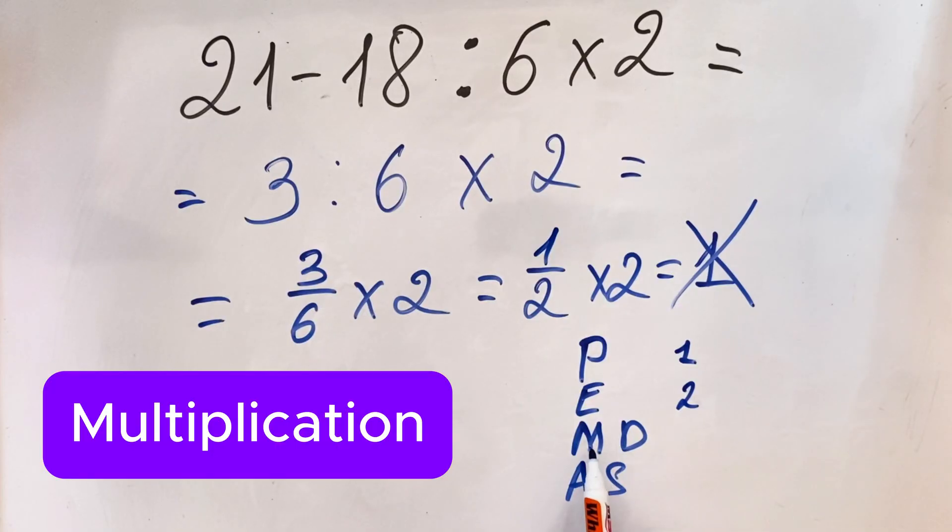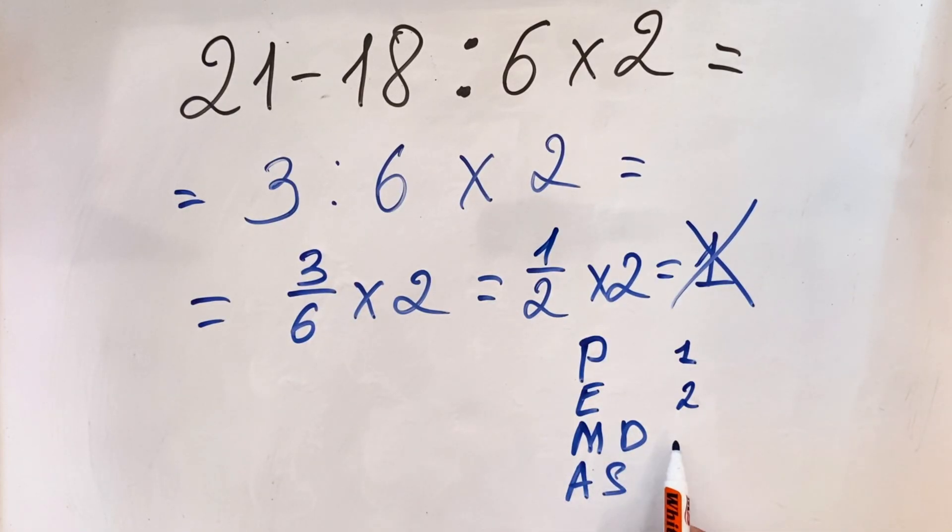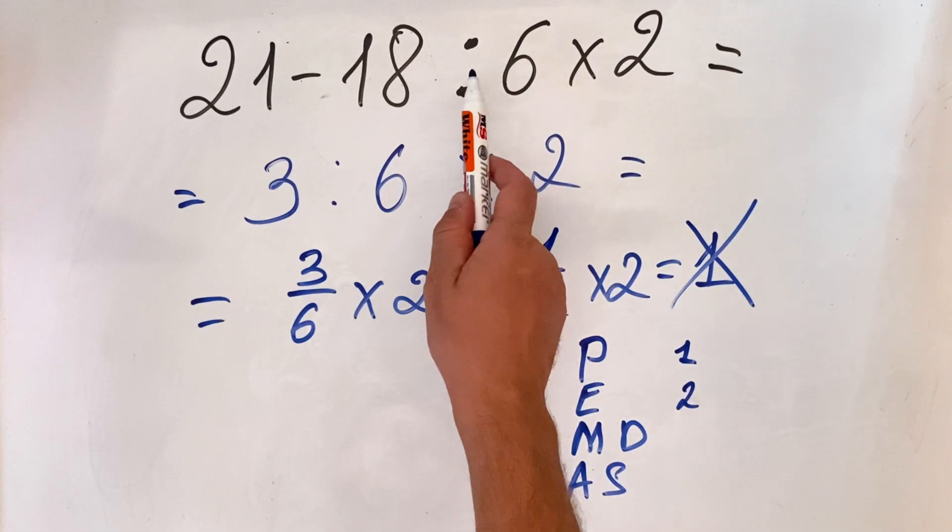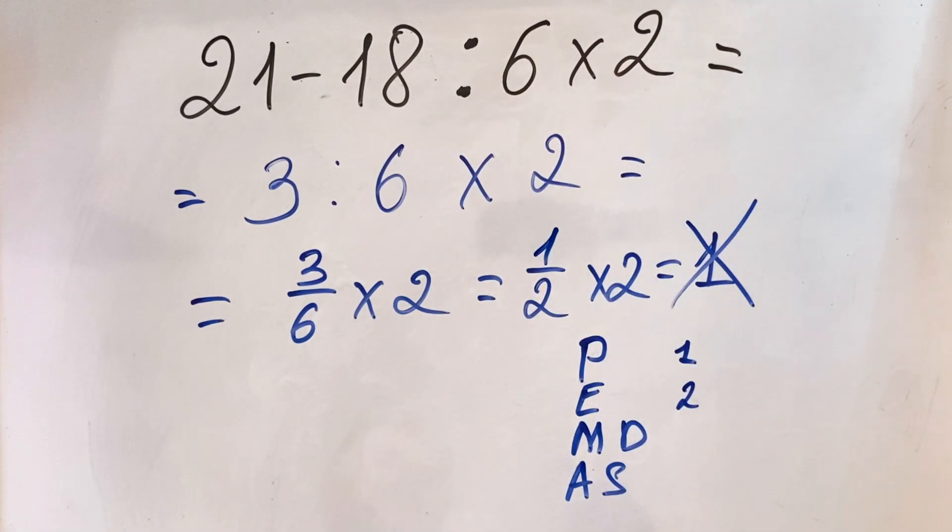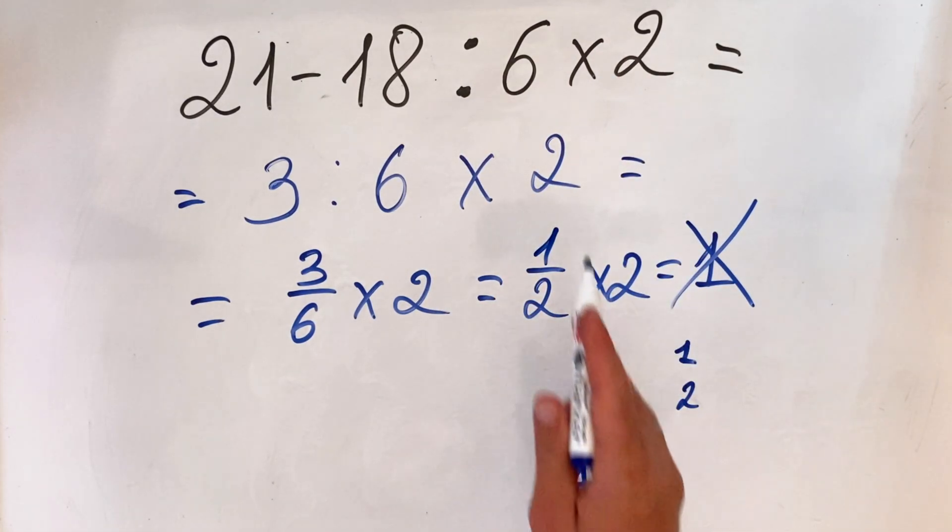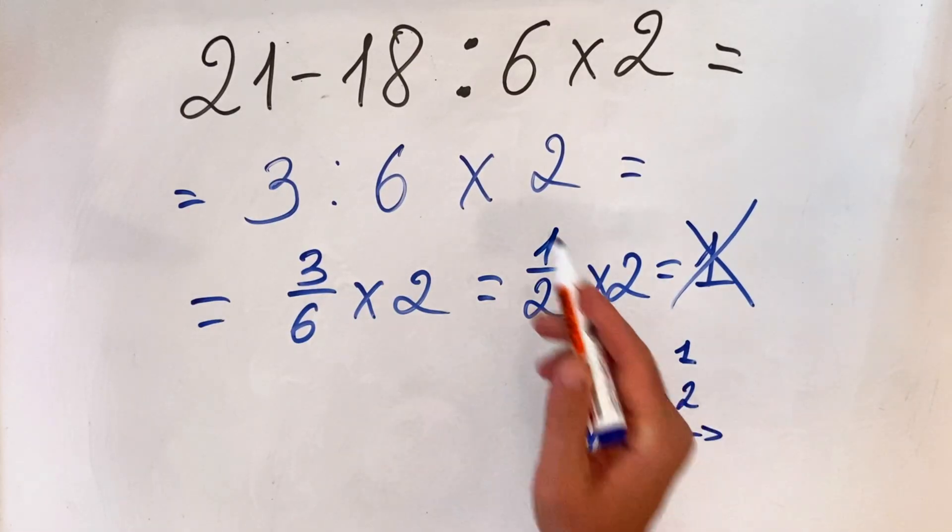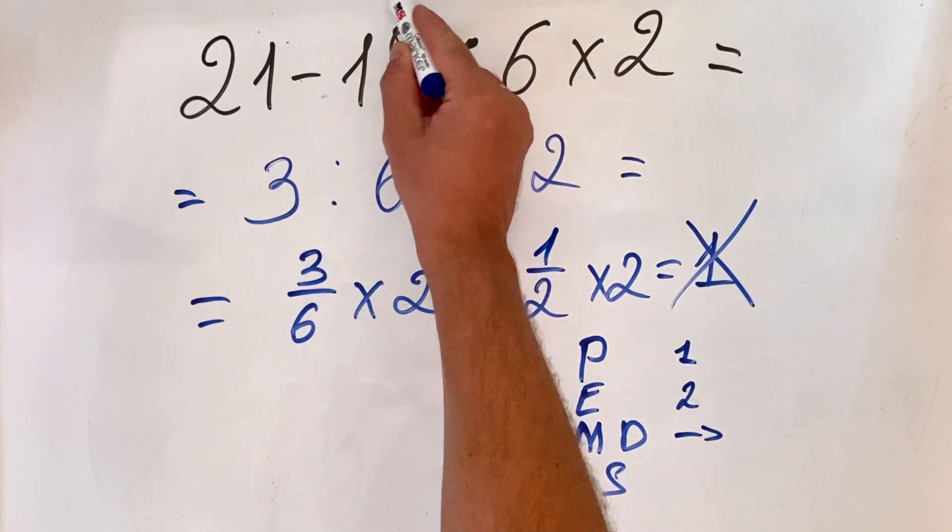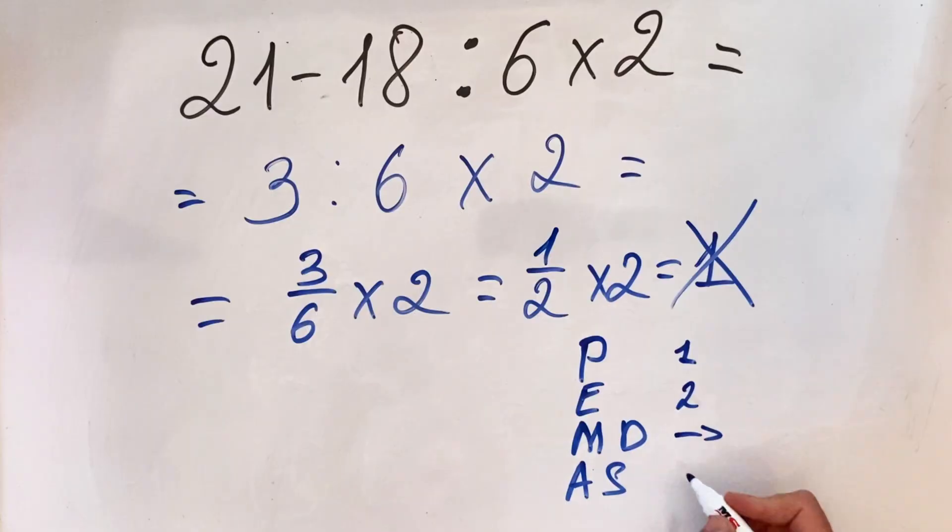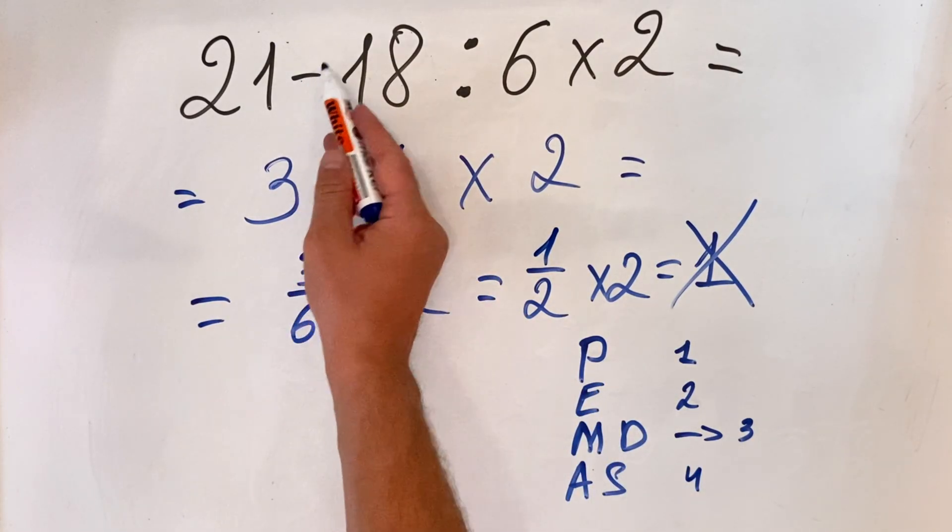Then we have multiplication and division, which have equal priority. In this case we have both division and multiplication. When we have multiplication and division with equal priority, we do it from left to right, and that's third. Then the last is addition and subtraction. So we also have subtraction, which we do last.